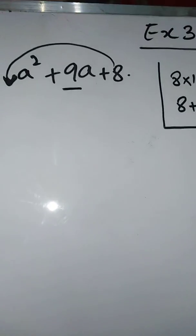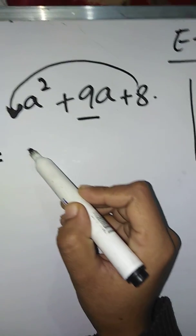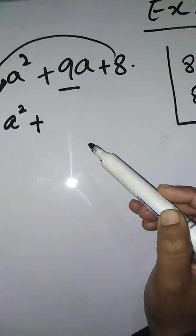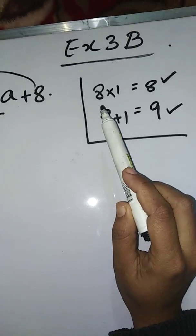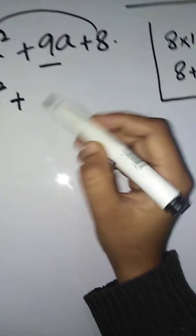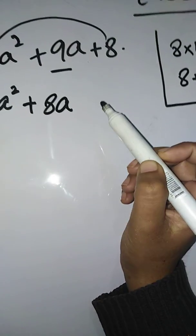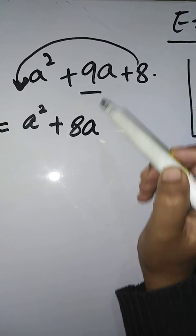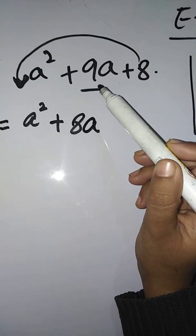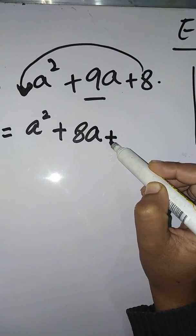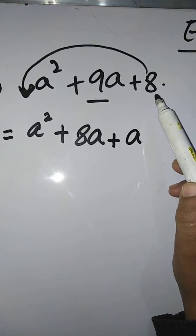Write the first term as it is: a². In place of the middle term, write the two factors. Remember the sign that comes here — write the same sign as the middle term. First write the bigger factor, which is 8, so write 8a. For the second sign: since 8 + 1 = 9 and the middle term is positive, the second sign is plus. Write +a. Then write the last term as it is: +8.